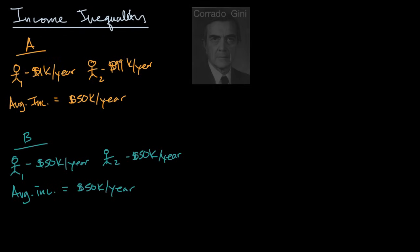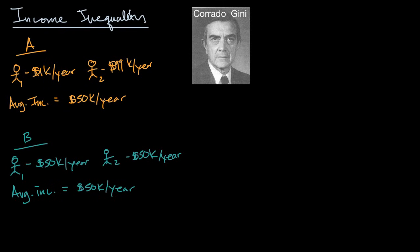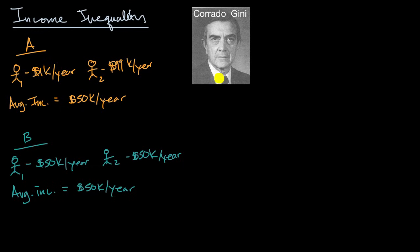This is something that Italian statistician Corrado Gini tried to address. He came up with something called the Gini coefficient to measure income inequality for a nation, and the way he approached it is actually pretty intuitive.